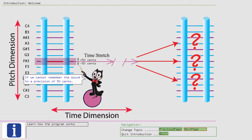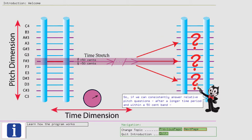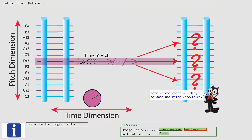If we cannot remember the sound to a precision of 50 cents, then chances are we cannot identify it when we hear the second sound. So if we can consistently answer relative pitch questions after a longer time period and within a 50 cent band, then we can start building an absolute pitch repertoire.